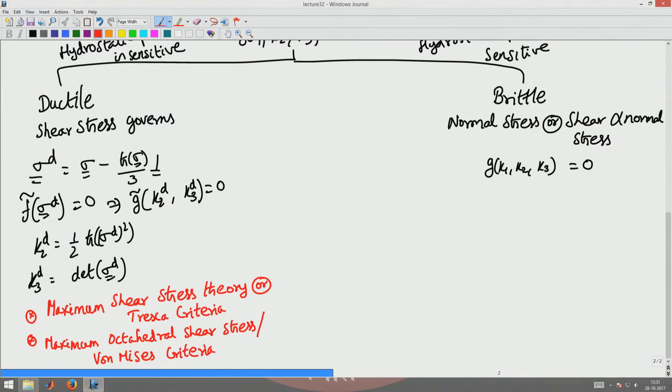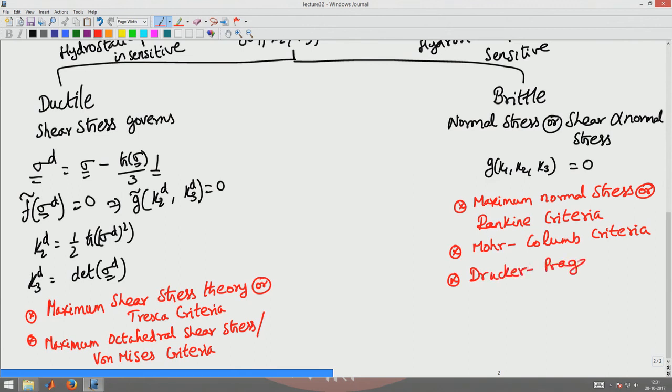Similarly, in pressure sensitive materials, we will look at three theories. One is maximum normal stress or Rankine criteria. Second is Mohr-Coulomb criteria, and last is Drucker-Prager criteria. We will look at these three theories in brittle mode of failure and two theories in ductile mode of failure.